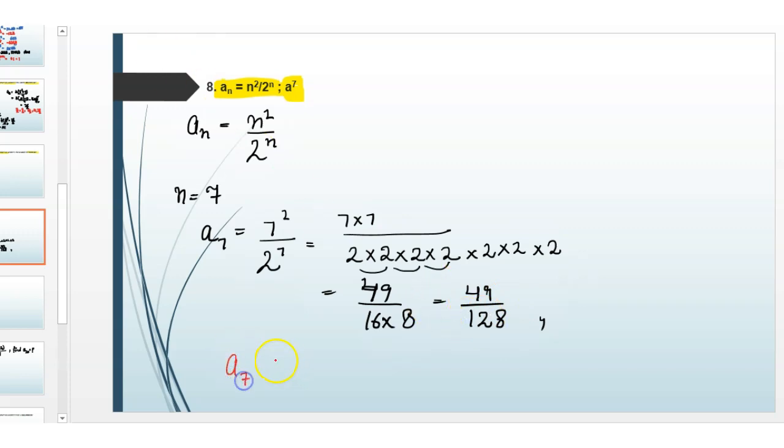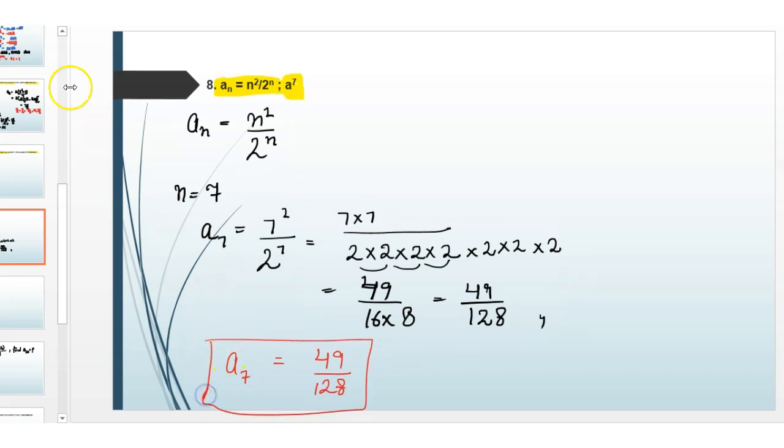So the 7th term equals 49 divided by 128. This is your answer. I hope this is clear to you. Thank you.